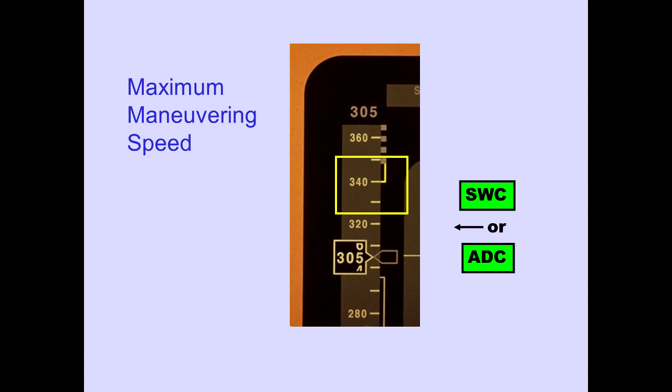Maximum maneuvering speed is displayed as an amber line. This indicates a maneuver margin to buffet. Maximum maneuvering speed in this example is 340 knots. The stall warning computer or selected air data computer provides this information.